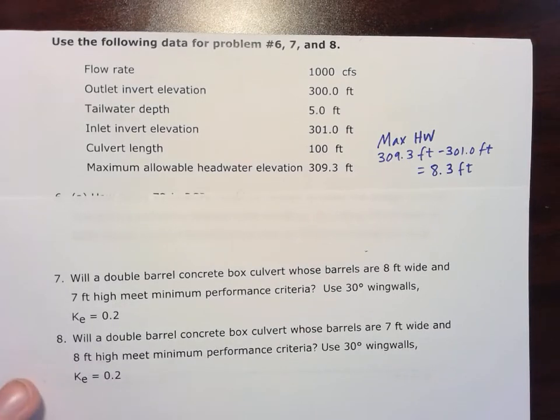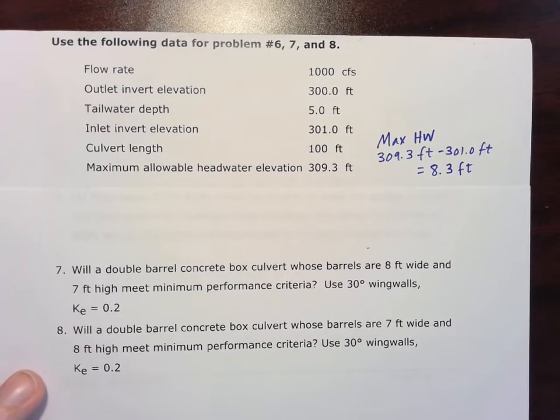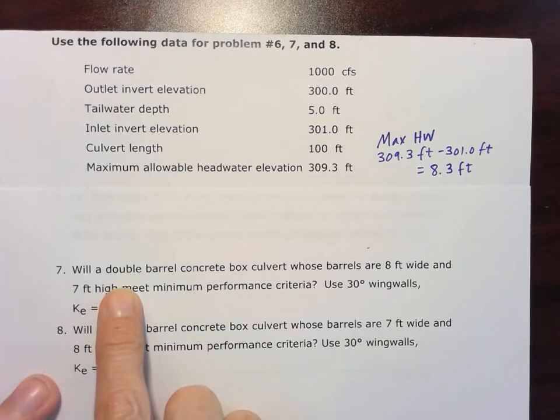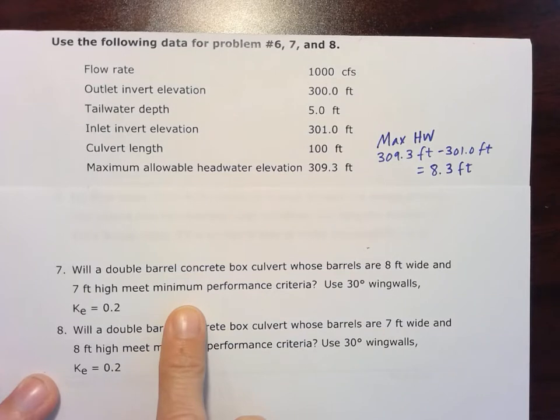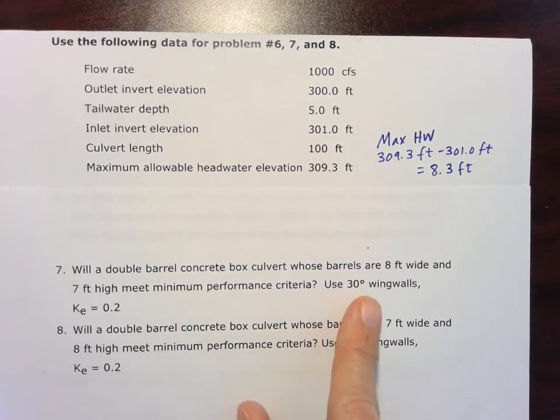Alright, for FE Hydraulics Chapter 5, Homework Problem 7, we're going to use the information from Problem 6 and try to figure out if a double barrel concrete box culvert whose barrels are 8 feet wide and 7 feet high will meet minimum performance criteria. Remember, when we have that double barrel, we're going to take that Q and divide it by 2 because we have the 2 barrels.